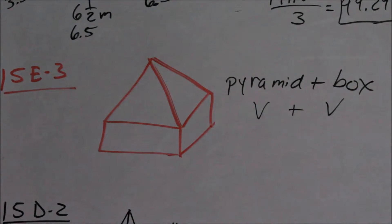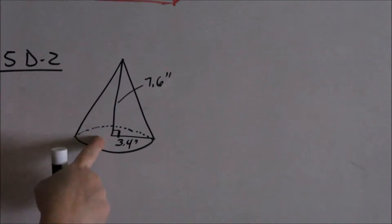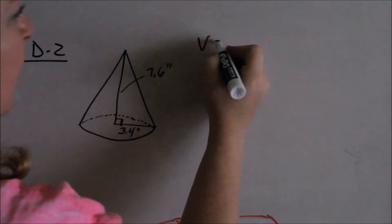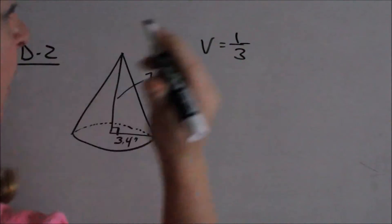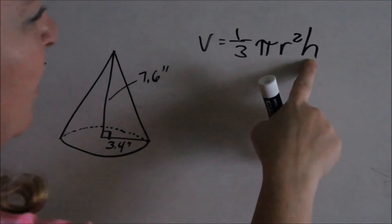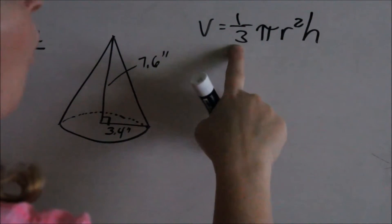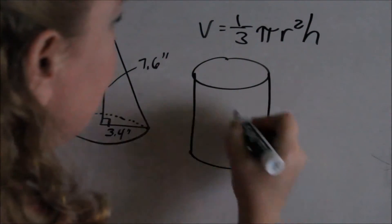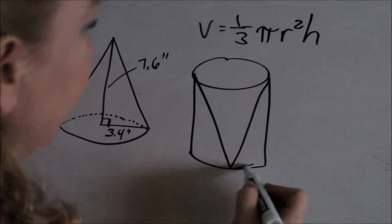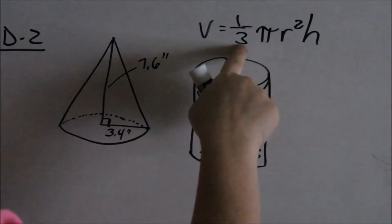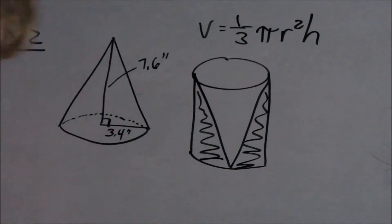Looking at 15D2 — a cone, like an ice cream cone. The volume of a cone is one-third the volume of a cylinder: one-third times pi r squared times h. You have a cylinder, and you chop part of it off — you want one-third the volume of a cylinder. That's where that formula comes from.